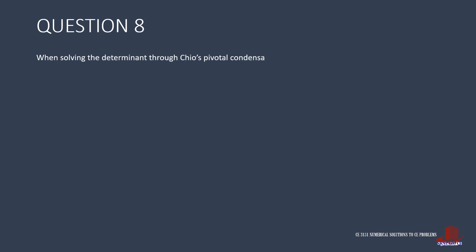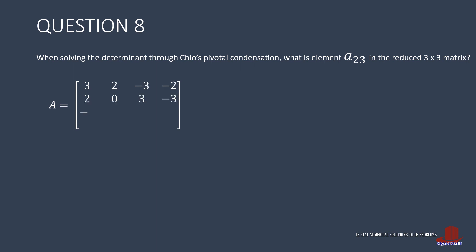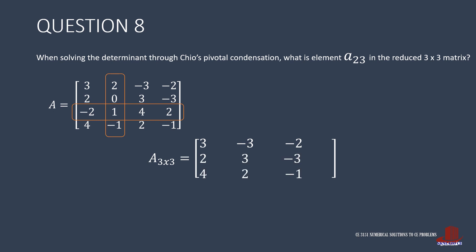The next task is to identify element A[2,3] after reducing matrix A through Chió's Pivotal Condensation. For this operation, we look for an element valued at 1 and use it as pivot element — that is, element A[3,2]. Highlight the third row and second column, then identify the remaining elements in a 3×3 matrix. We do not have to solve for all elements. Identify where element A[2,3] is, then complete the operation: at row 2, column 3, element A[2,3] is negative 3. We then subtract the reflected factors of 2 and 0, which keeps element A[2,3] as negative 3.